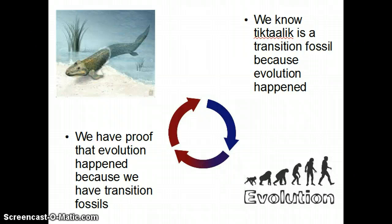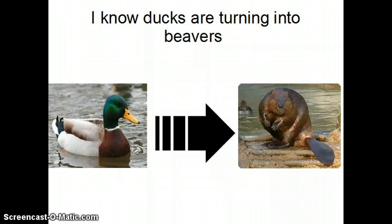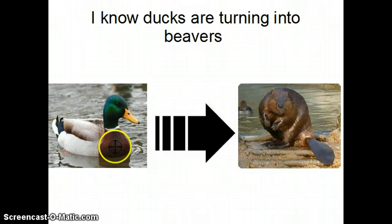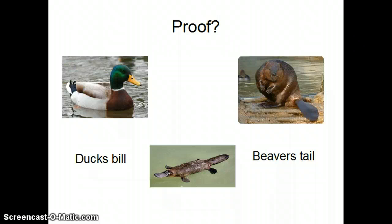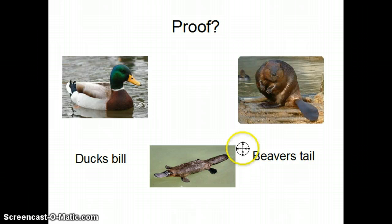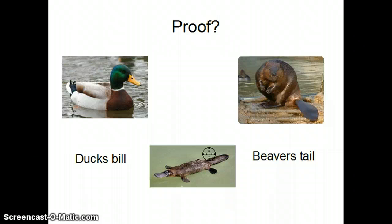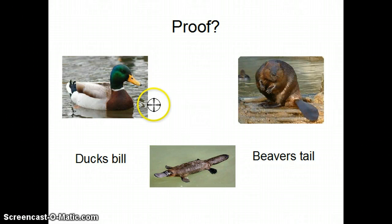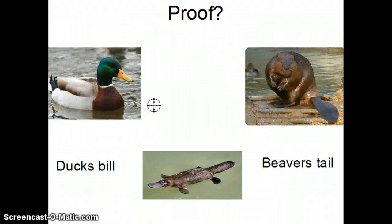An example I've come up with: I know that ducks are turning into beavers. You're going to think that's a little ridiculous, but watch. If I go into this with the assumption that ducks can turn into beavers, then I look at a platypus — it has a bill like a duck and a tail like a beaver — it's halfway between a duck and a beaver. If I assume that this transition is possible, then the conclusion I draw makes sense. The problem is, if you take away that assumption, this entire argument falls apart.